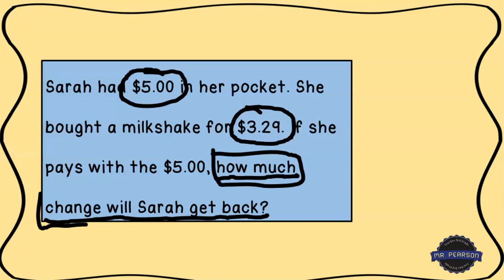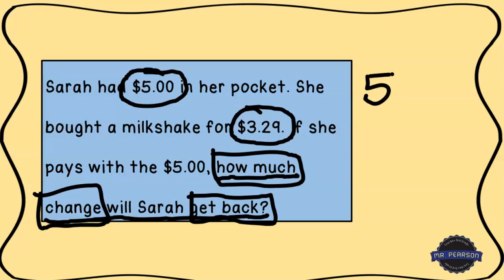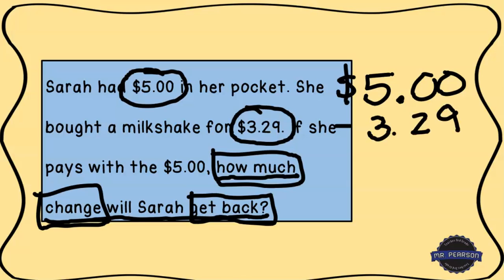We're going to set this up as a subtraction problem. I'll box the words 'how much,' 'change,' and 'get back' to help me remember this is subtraction. I'm going to write five dollars — so five, decimal point, zero zero, because there's nothing in the cents column — with a dollar sign to remind me this is money. Then minus three dollars and twenty-nine cents. Make sure your numbers always line up, because if they don't, you'll end up making a mistake.